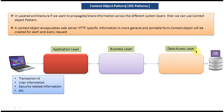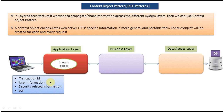In this layered architecture, if you want to pass some common information across different layers, we can use the Context Object pattern. The client sends information to the application layer, and the application layer identifies the common information that needs to be shared with the business layer and data access layer — such as transaction ID, user information, or security-related information. That common information is placed into the context object and passed to the different layers.